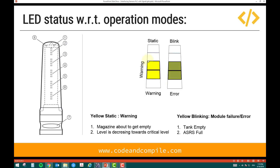For segments 3 and 4, yellow static indicates a warning — for example, a magazine is about to get empty, or a tank level is decreasing toward a critical level. Yellow blinking indicates an error — for example, the tank is completely empty or a warehouse unit is full and the machine cannot work further. The difference between warning and error is: warning means the situation is going to get worse, so please come and take care of it; error means it's already worse and operation has stopped.